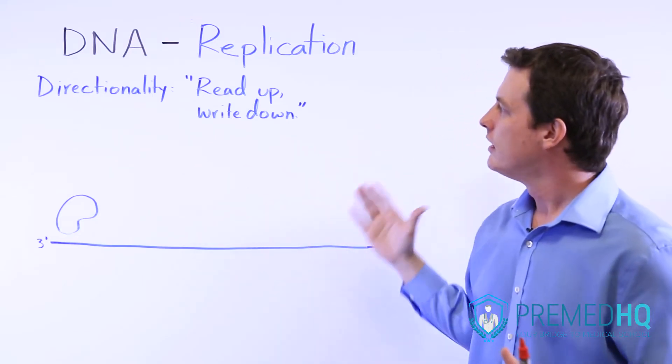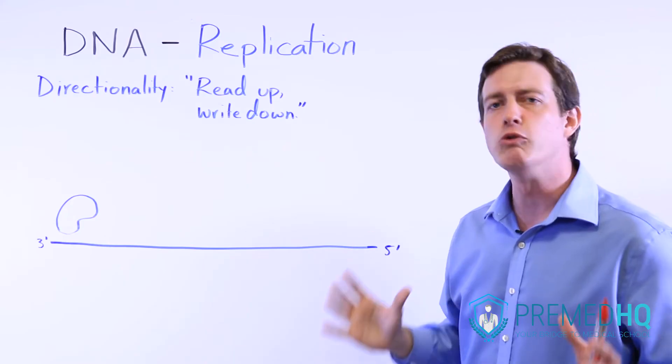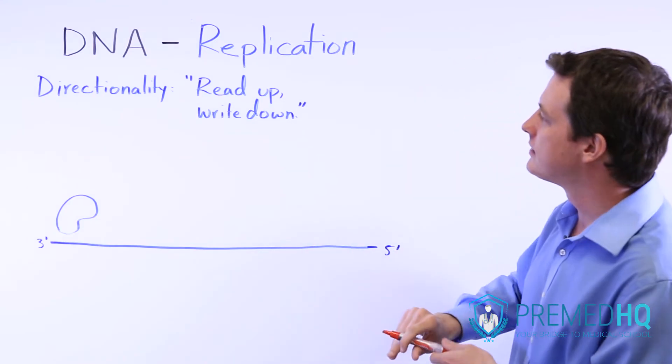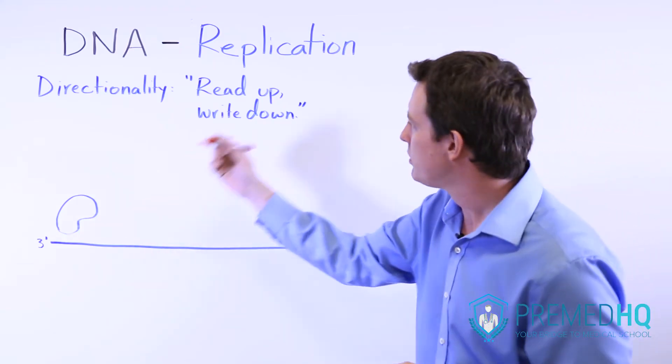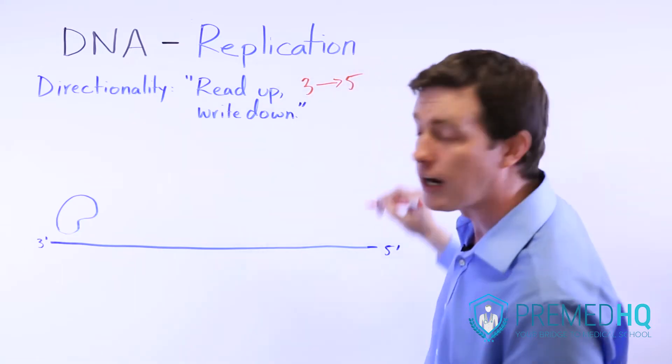I think the best way you can remember it is by thinking of a studying strategy. When you study, you read up on something and you write it down. What I mean is that the DNA polymerase will read up, so it reads in the upstream direction from three to five.